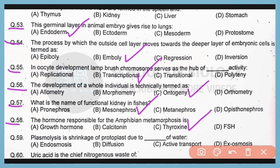Question number 59. Plasmolysis is the shrinking of protoplasts due to exo-osmosis. So correct answer is option D.